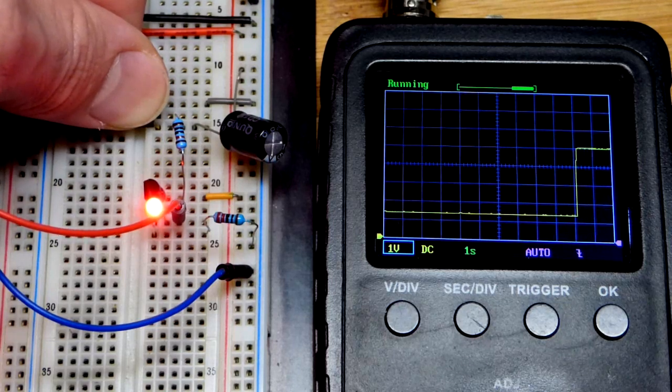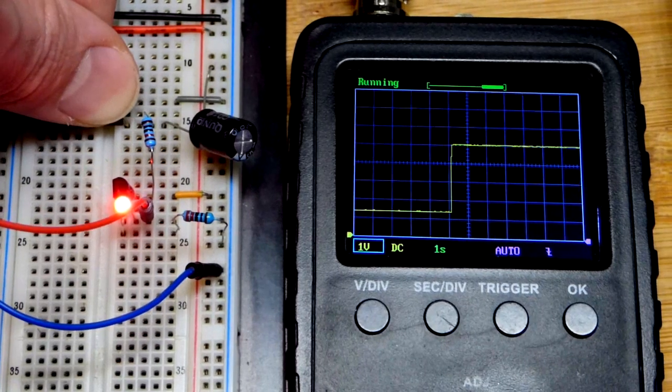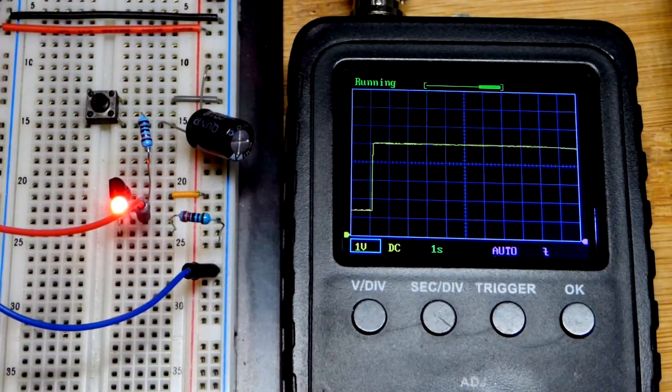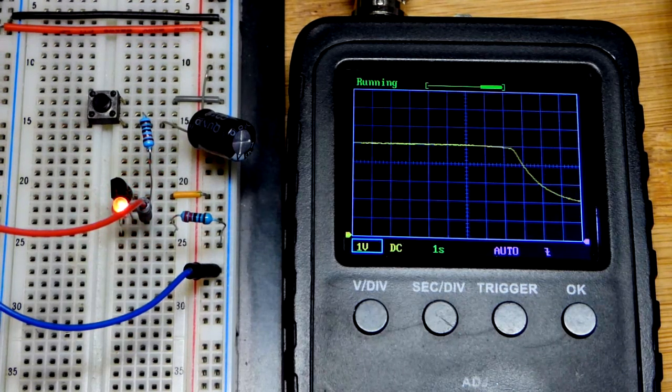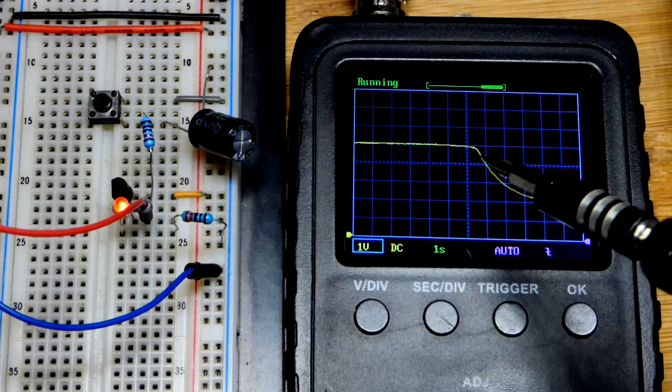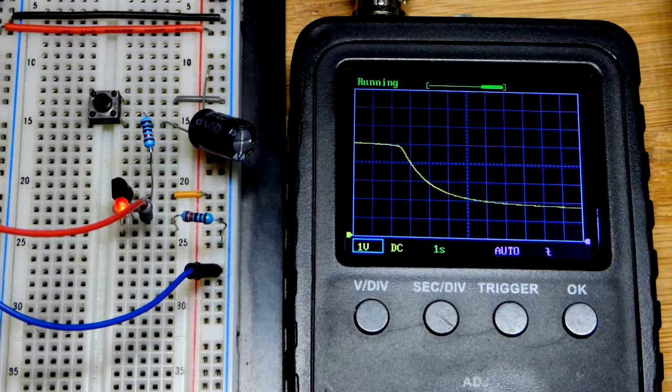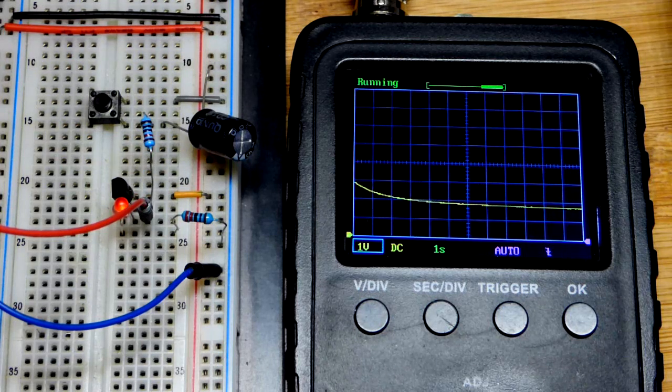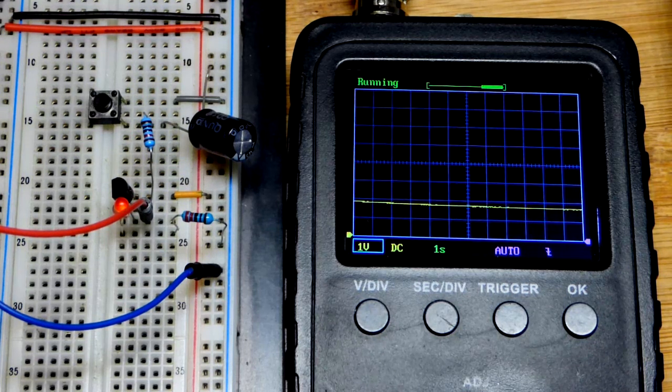Now with the switch closed, you can see we have the full 5 volts of the power supply across the LED and its protective resistor. Now it's still 5 volts, now it's dropping. It was like 2-3 seconds before it started dropping, and there you can see the curve. When it gets pretty close to being flat, you know that the LED is off. A little current will trickle through with a faint glow, but for the most part it's off. Once it's completely level, it's completely off.